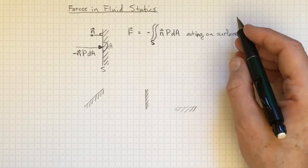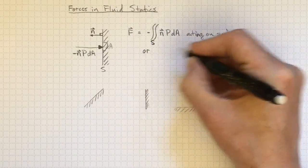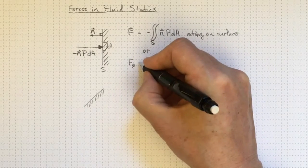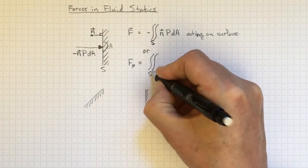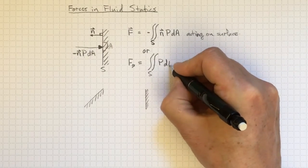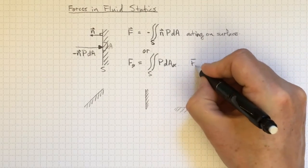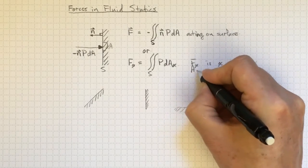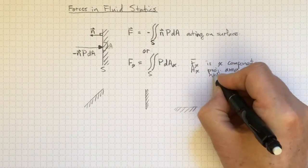Or, if we were interested only in components of that force, we could make our lives a little simpler by not worrying so much about the vector stuff. We could say that the force component in the x direction will still have the integral over the surface area, and we'll take the pressure and we'll multiply it by the area projected in the x direction. So that Fx is the x component of the force, and Ax is the projected area in the x direction.